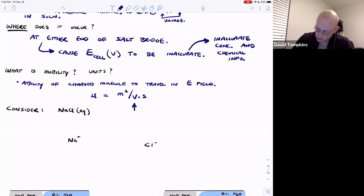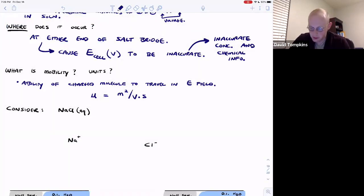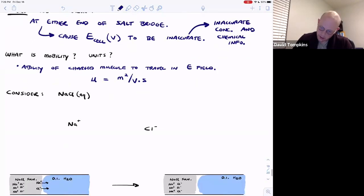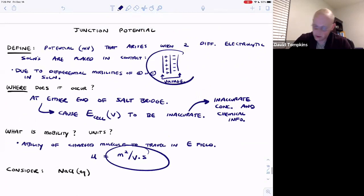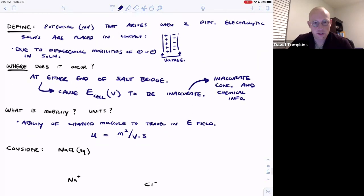So this voltage is of course dependent upon the potential between the reference and indicator solutions or the cathode and anode solutions. But if this mobility significantly differs for two ions, then we get this charge separation leading to inaccuracies in concentration or chemical information type measurements.